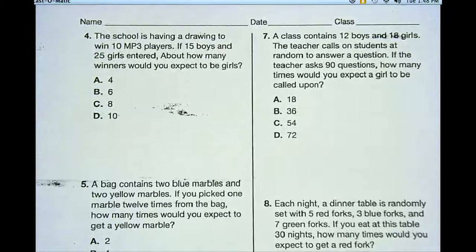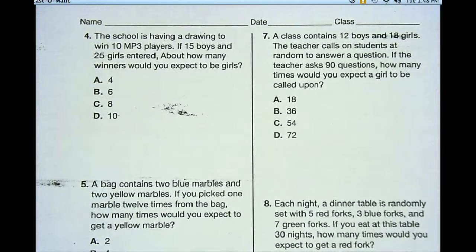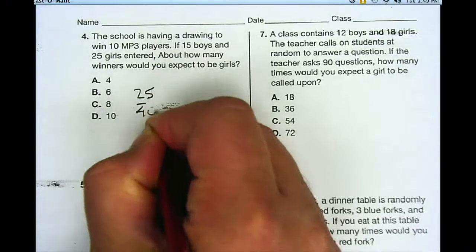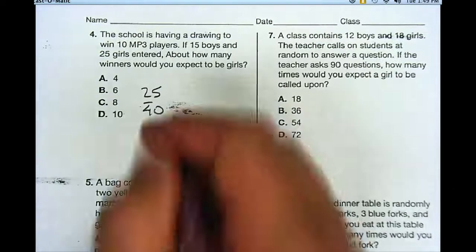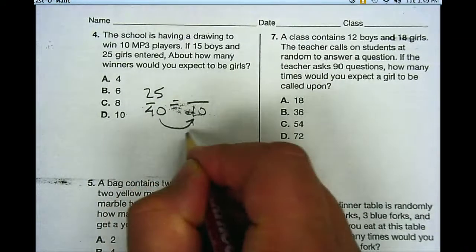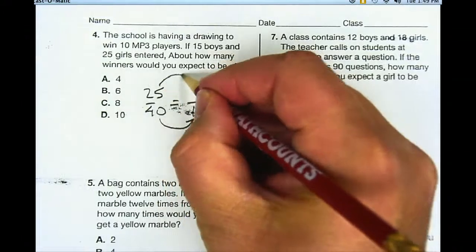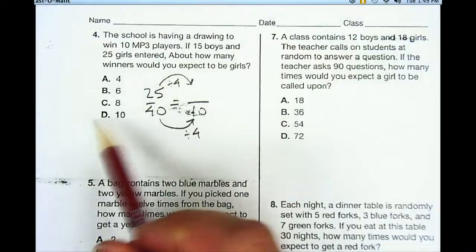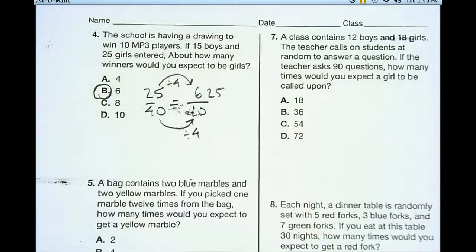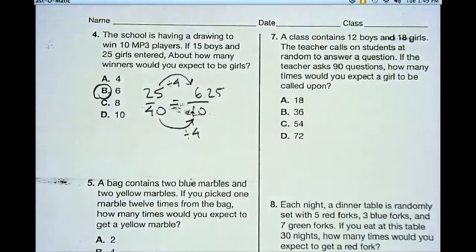I'm going to go to the back side of this worksheet. Number four, the school is having a drawing to win 10 MP3 players. If 15 boys and 25 girls entered, about how many winners would you expect to be girls? So I have 40 students, 15 boys and 25 girls, so I have 25 out of 40. And I want to figure out how many out of 10 that is. So I can divide 40 divided by 4 is equal to 10. So if I take 25 and divide that by 4, I'm going to get about 6.25. So the answer for that one is going to be B, or 6.